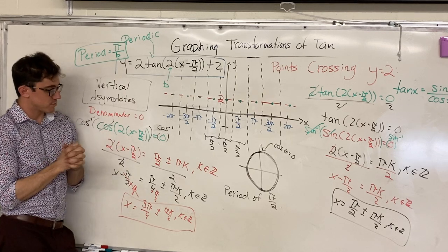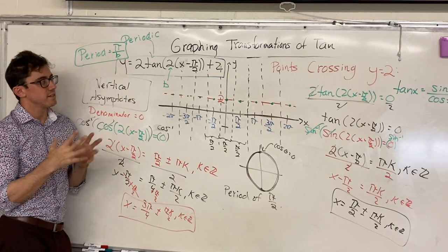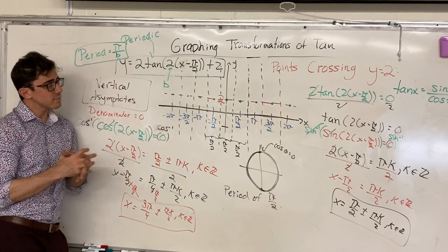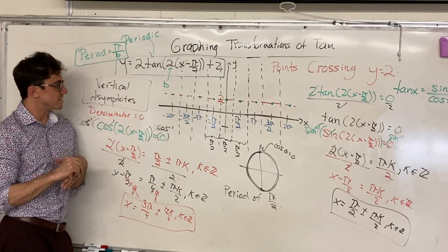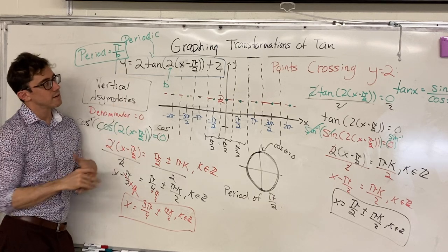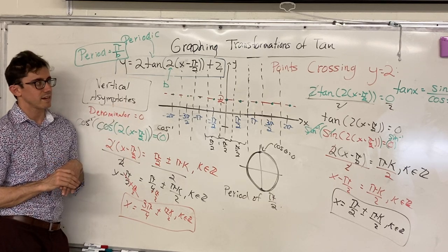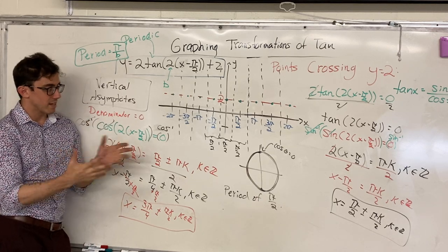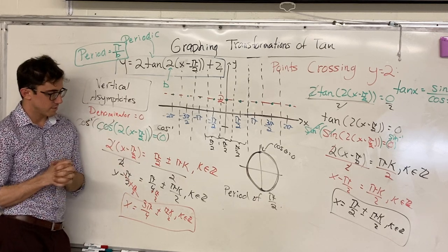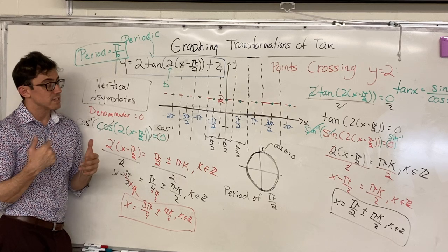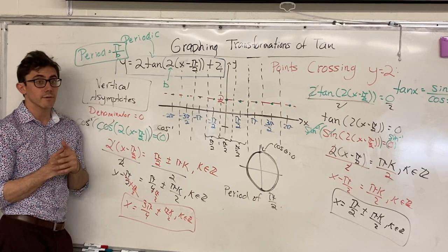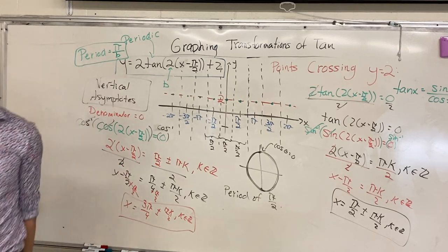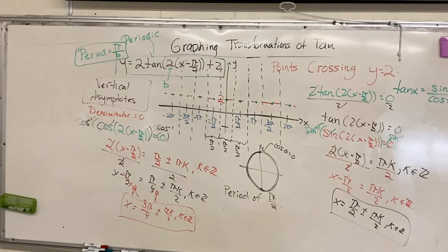I hope this was helpful to illuminate the details of graphing tan functions under transformations, and some of the ideas behind solving for the important points crossing that analogy to the sinusoidal axis with the tan function. I hope the algebra was easy enough to follow. If you have any comments or suggestions, please let me know, and thank you so much for watching.